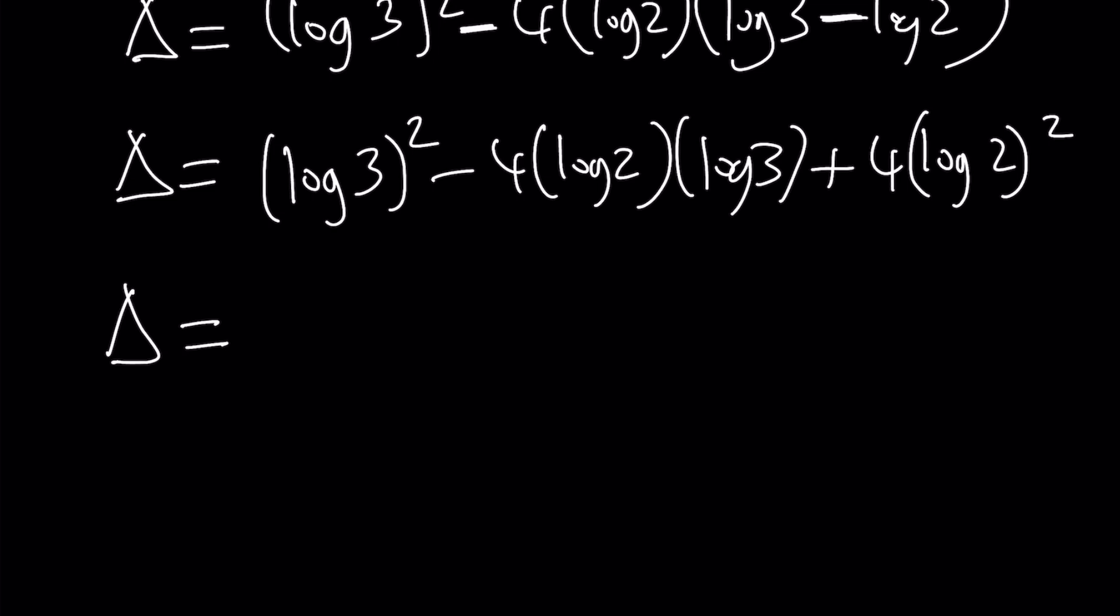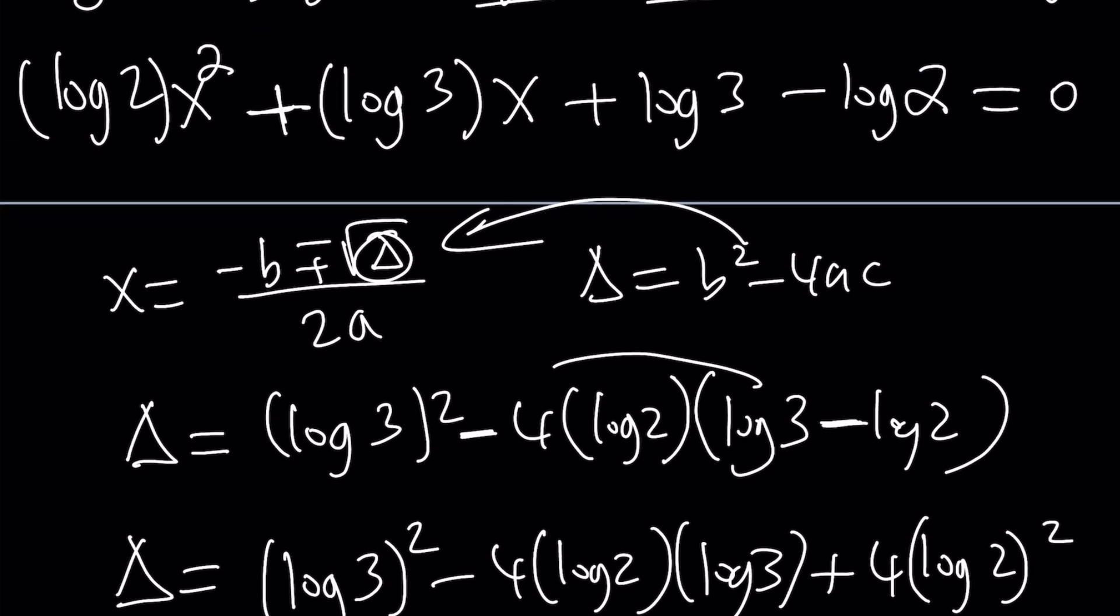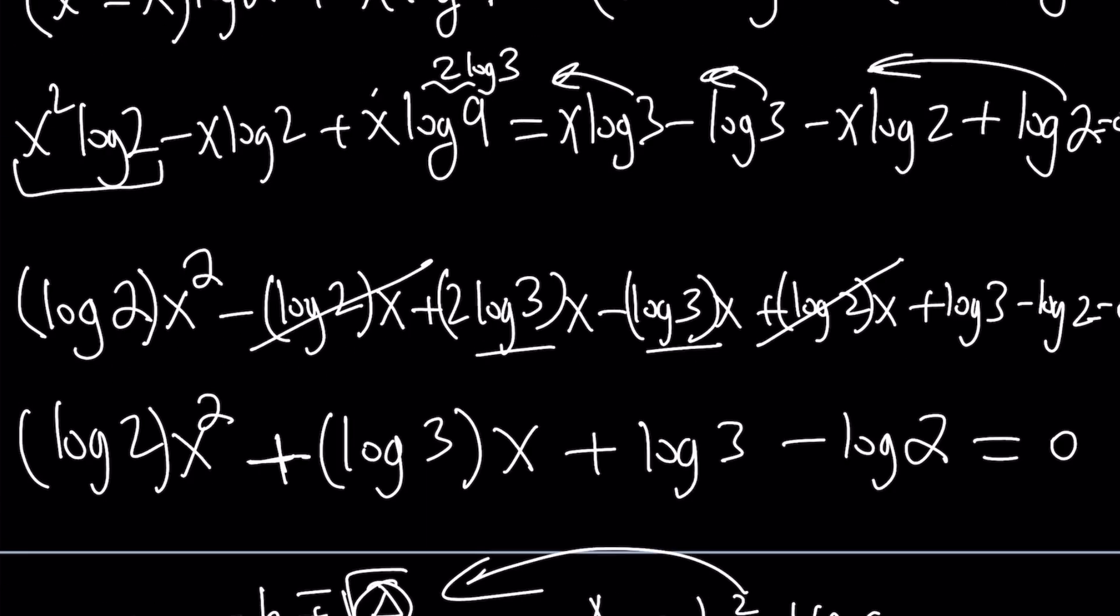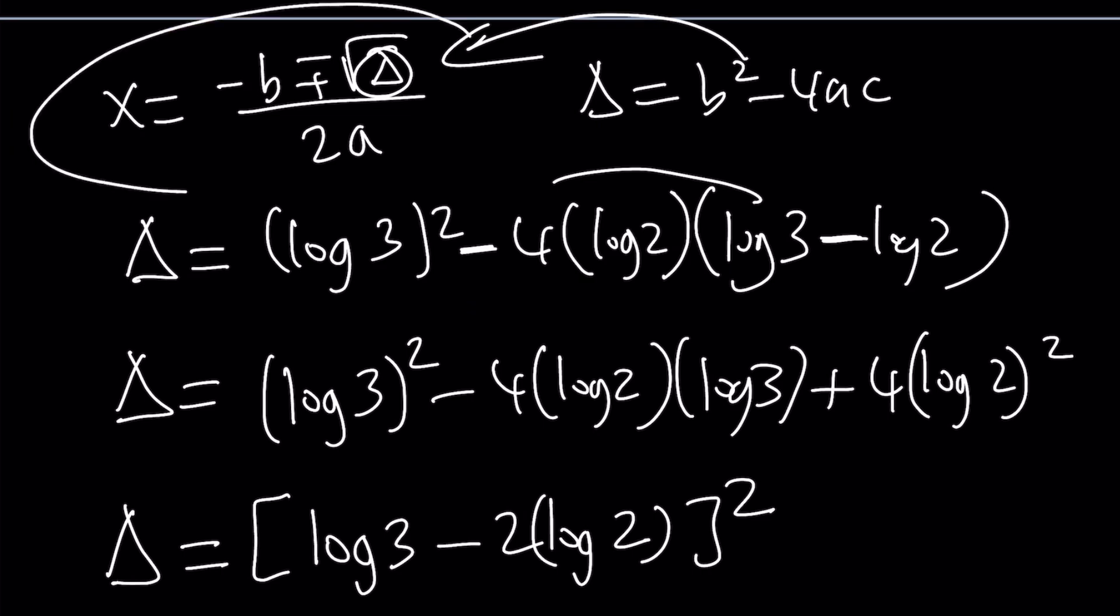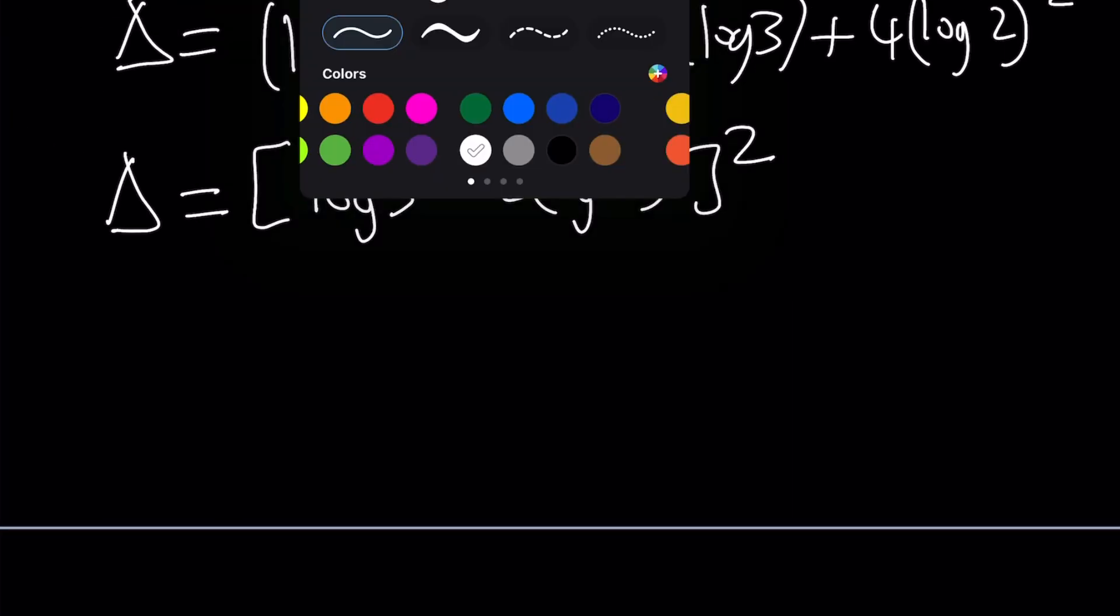Here, we have a perfect square and that's perfect. That's what you want. This is log 3 minus 2 log 2 squared. Awesome. Because we're going to square root it and the square is going to disappear. And we're going to end up using this formula. Now, let's go ahead and use it.